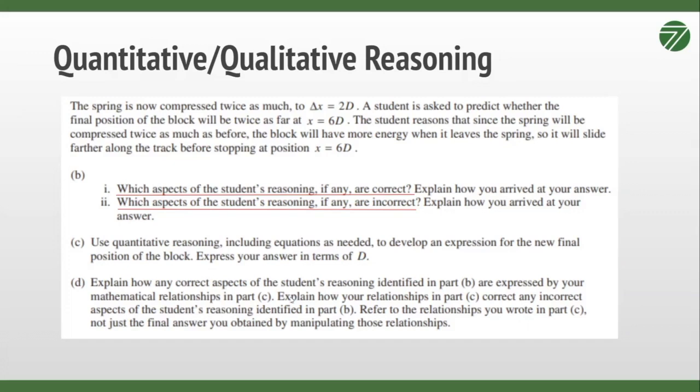Explain how your relationships in part C correct any incorrect aspects of the student's reasoning identified in part B. So I just showed in my equation that I just derived that this is why the student was incorrect about the distance, and I can show that from this equation that I just derived. And then refer to the relationships you wrote in part C, not just the final answer you obtained by manipulating those relationships. So they're asking you for not just your final equation, but the equations that you use to derive that equation because the equations that you started with are the ones that demonstrate the real relationships. The ones that you derived demonstrate that you can do algebra, but they might not necessarily demonstrate that you understand the physics involved.